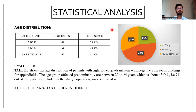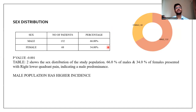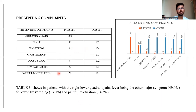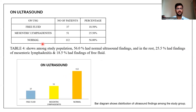In the statistical analysis, the age group of 20 to 24 years had the highest incidence, and males showed higher incidence, with 132 males out of 200 presenting with right lower quadrant pain. The presenting complaints included abdominal pain in all patients, followed by fever as the next major symptom at 49%, vomiting in 13% of patients, and painful micturition in 14.5% of patients. On ultrasonography, findings were normal in 112 patients, while free fluid was seen in 37 patients and mesenteric lymphadenitis was observed in 51 patients.